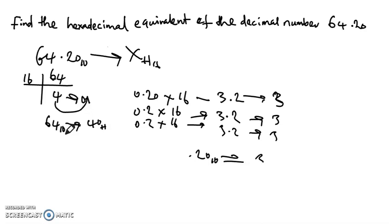So our final solution to this is: we have 64 point 20 to base 10 is nothing but, here we have 40, so it is four zero point four zero point three three three hexadecimal.